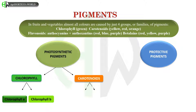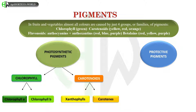Carotenoids are also known as tetraterpenoids. These are yellow, orange and red colored organic pigments. Their biological functions include photosynthesis, photoprotection and cell signaling. Carotenoids are of two types. Carotenoids with molecules containing oxygen, such as lutein and zeaxanthin, are referred to as xanthophylls. The unoxygenated, that is oxygen-free carotenoids, such as alpha-carotene, beta-carotene and lycopene, are known as carotenes. Carotenes contain only carbons and hydrogen — that is hydrocarbons — and come under the subclass of unsaturated hydrocarbons.